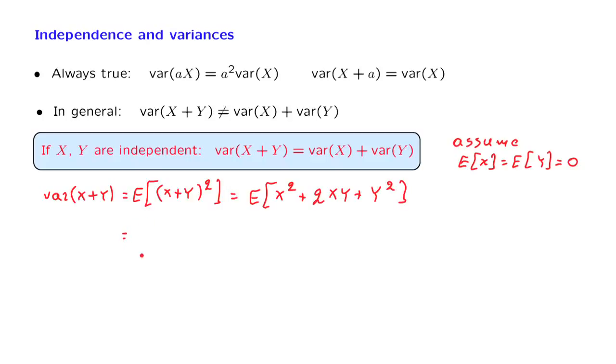Then we use linearity of expectations to write this as expected value of X squared plus twice the expected value of X times Y, and then plus the expected value of Y squared. Now, the first term is just the variance of X, because we have assumed that we have zero mean. The last term is similarly the variance of Y.